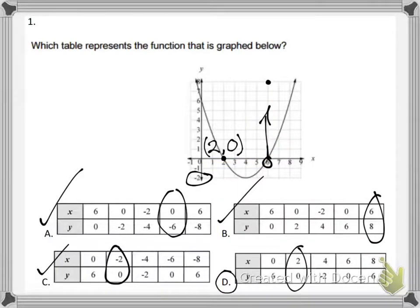And then choice C, negative 2 comma 0, that would be somewhere over here on the coordinate plane, also not part of the graph. That explains why all of those are not the right answers. So again, it was choice D right there.